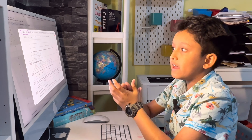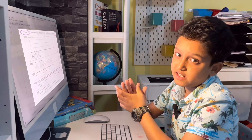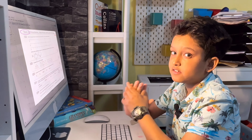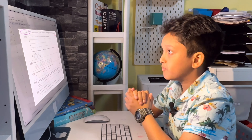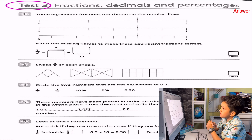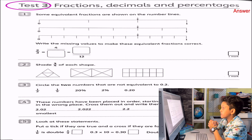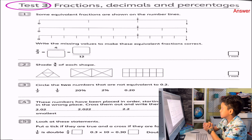So as I said, test 3 is all about fractions, decimals and percentages. Let's start with question 1. Some equivalent fractions are shown on the number lines. What are the missing values to make these equivalent fractions correct?